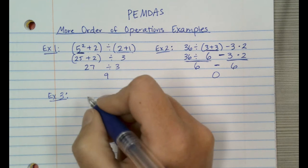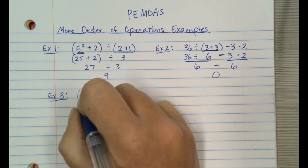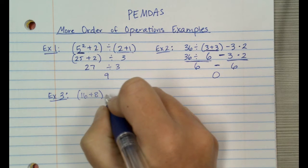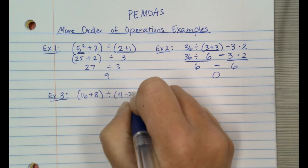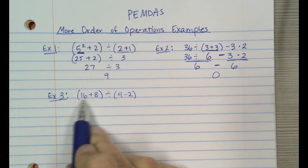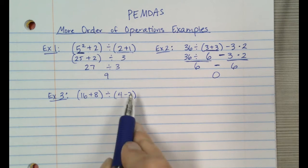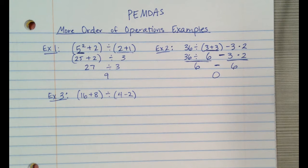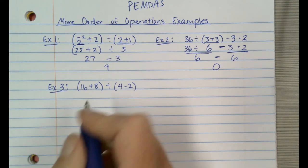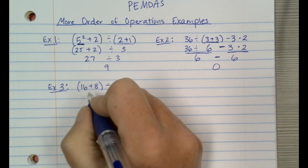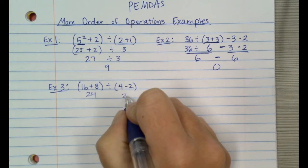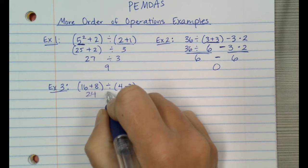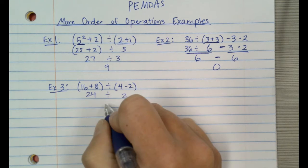Let's do one more relatively easy one: (16 + 8) ÷ (4 − 2). We have two different sets of parentheses so we can take care of those in the same step. 16 plus 8 is 24, and 4 minus 2 is 2. Then 24 divided by 2 is 12.